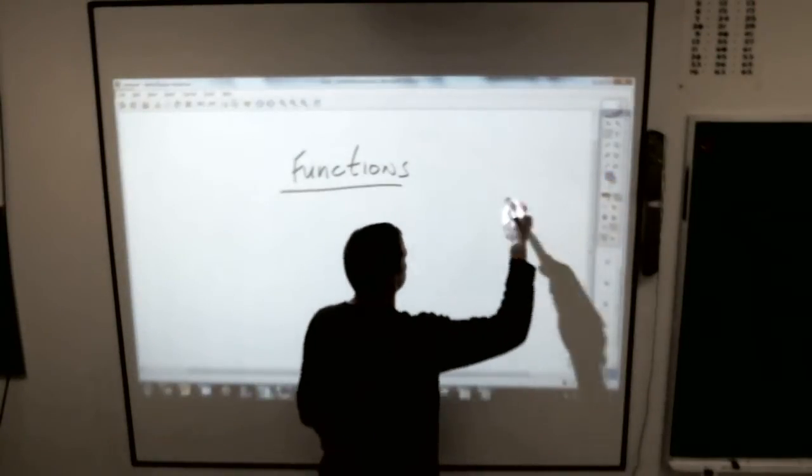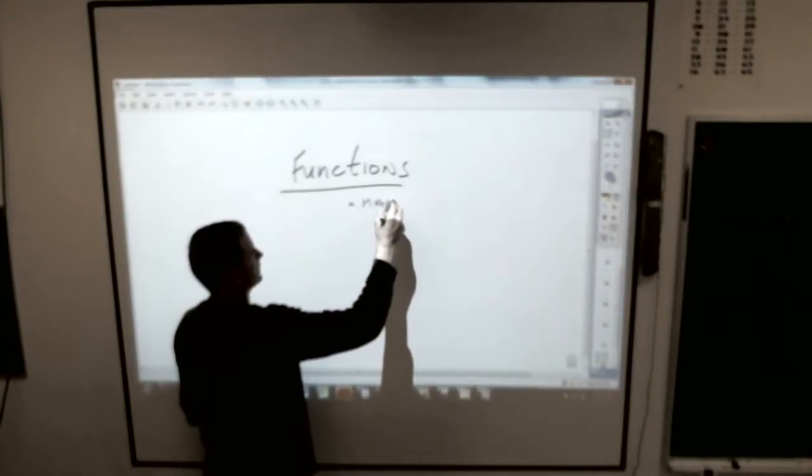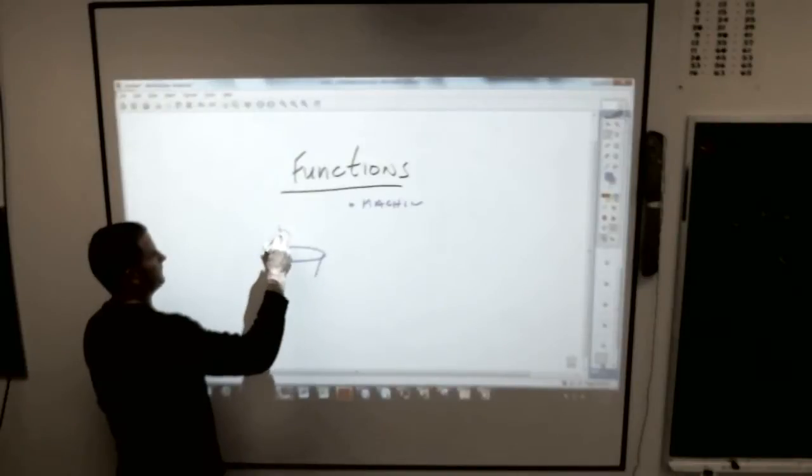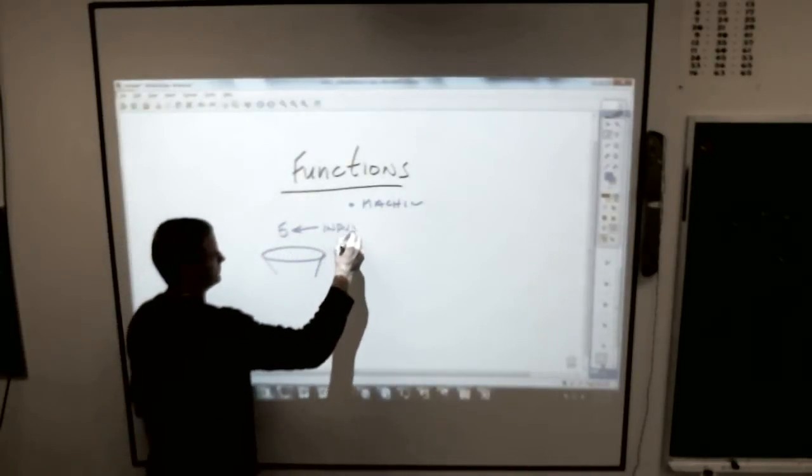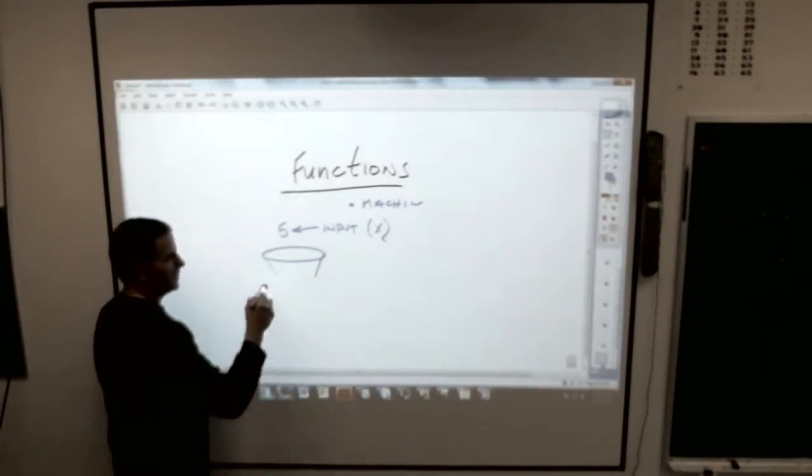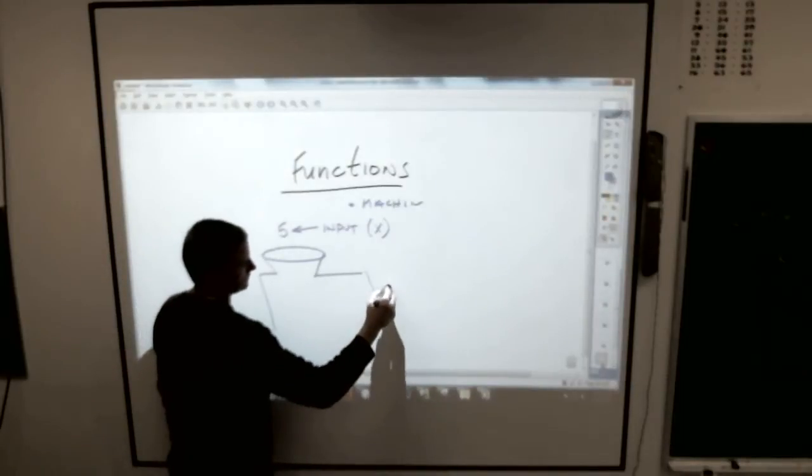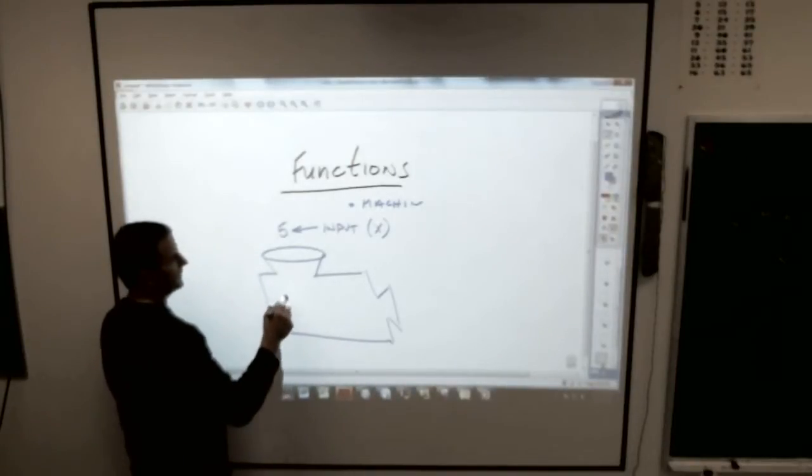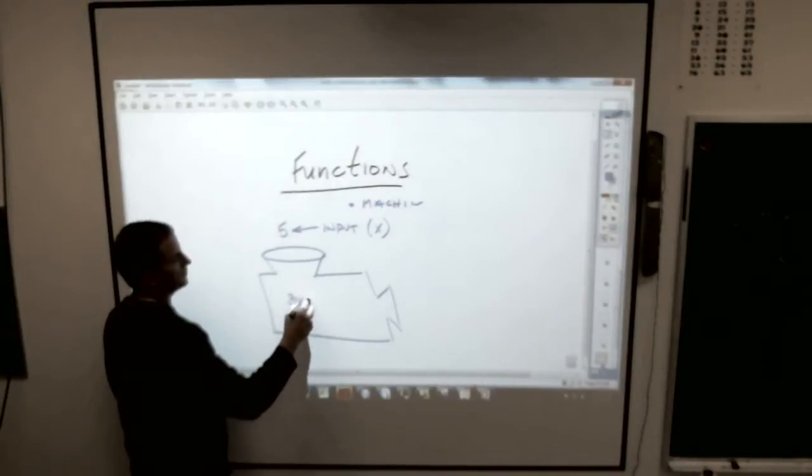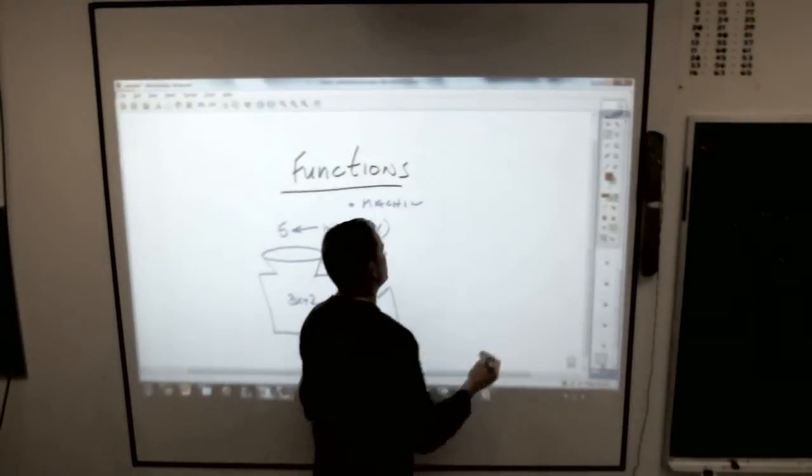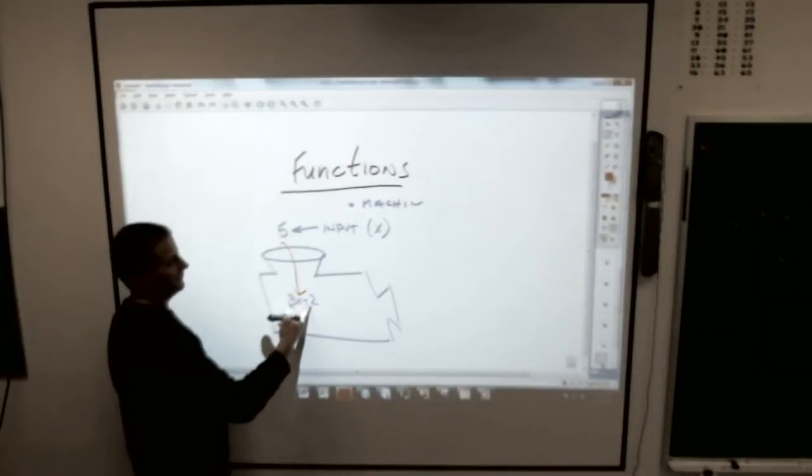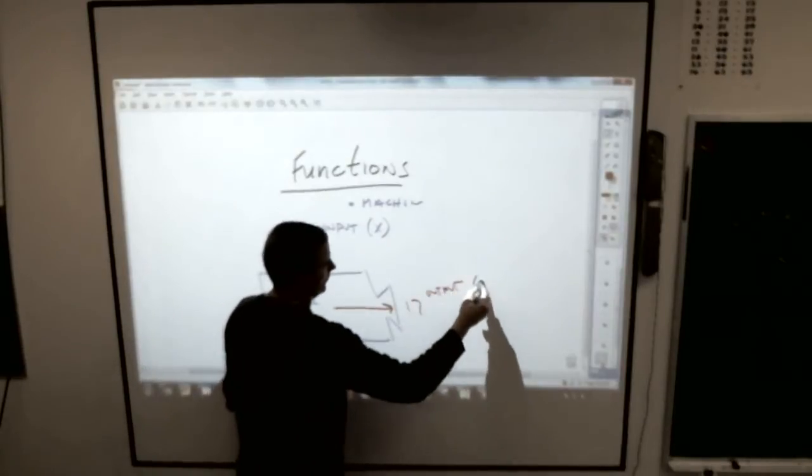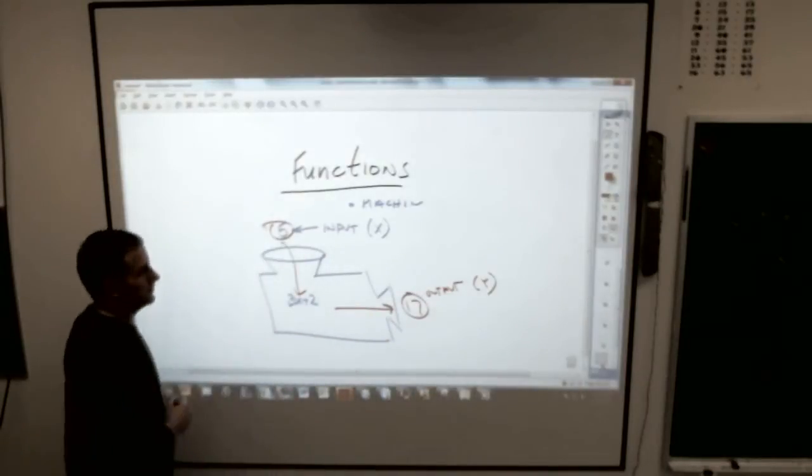You think about a function a little bit like a machine. You put a number in, let's say 5, which is called your input number. A lot of times we call that the x number. You put it into this handy dandy little machine. Let's say it's 3x plus 2. 3 times x is 15, 15 plus 2 is 17. And you spit out an output number, which we usually call the y number.